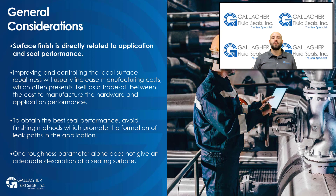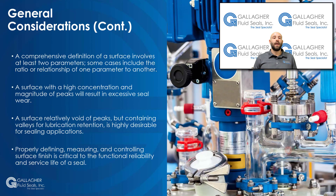In the final section of this webinar, we will review some general surface finish considerations. Surface finish is directly related to application and seal performance. Improving and controlling the ideal surface finish will usually increase manufacturing costs, which often presents itself as a tradeoff between the cost of manufacturing the hardware and application performance. To obtain the best seal performance, avoid finishing methods which promote the formation of leak paths in the application. For example, avoid strong axial lay in a reciprocating application or a spiral pattern on the shaft in a rotary application. One roughness parameter alone does not give an adequate description of a sealing surface, since it does not provide a complete representation of the surface profile. A comprehensive definition of surface finish for sealing applications involves at least two parameters, and in some cases, the ratio or relationship of one parameter to another.